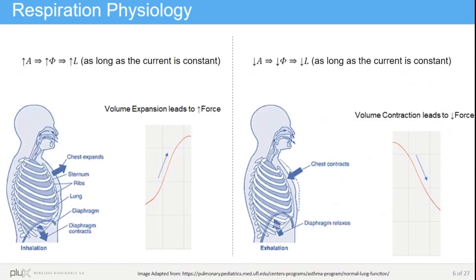In physiological terms, respiration is essential to provide oxygen, which is one of the key compounds required for the production of energy in the body and to dispose toxins, namely carbon dioxide. Respiration involves various parts of the respiratory system, but for our case the most important is the functioning of the diaphragm that influences the respiration rate, lung volume, and rib displacement.